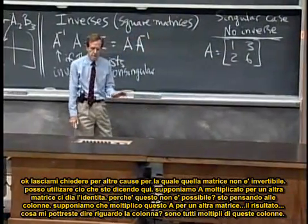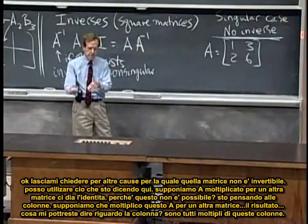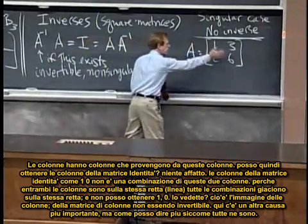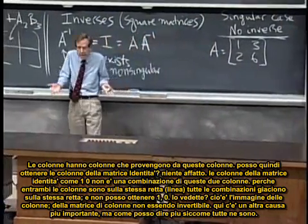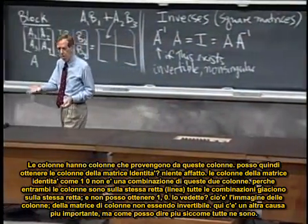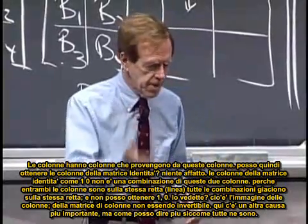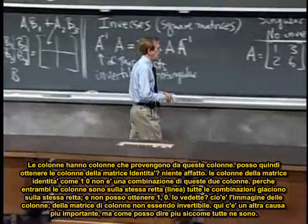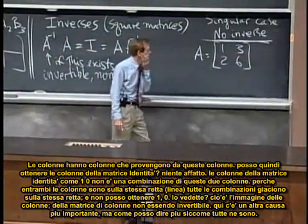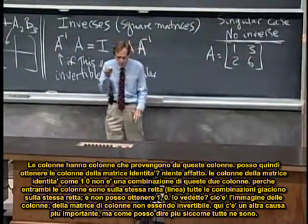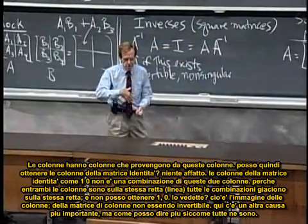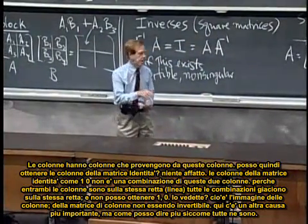They're all multiples of those columns, right? If I multiply A by another matrix, the product has columns that come from those columns. So can I get the identity matrix? No way. The columns of the identity matrix, like one zero, it's not a combination of those columns. Because those two columns both lie on the same line.